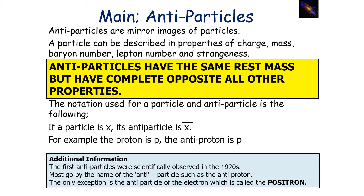Antiparticles are like mirror images of particles. A particle can be described in terms of its charge, mass, baryon number, lepton number, and strangeness. Antiparticles have the same rest mass as particles but are completely opposite in all other properties. The notation we use is: if the particle is named X, then the antiparticle is named X-bar. For example, a proton is P and the antiproton is P-bar.